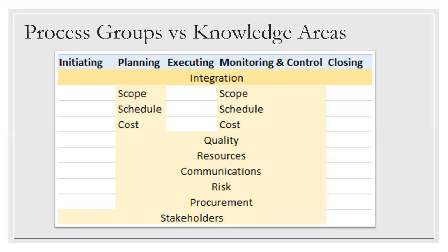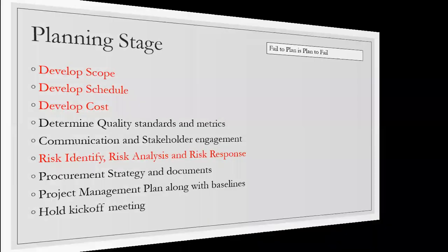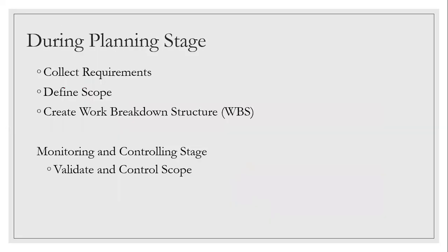If a change request comes from a stakeholder during execution, it has to go to the change control board. In the monitoring and control section, scope, schedule, and cost appear again — they are monitored. If there's any variance, the impact is assessed: are we meeting scope, working as per schedule, working within cost? That's checked in monitoring and control, but in execution we just work as per the plan.